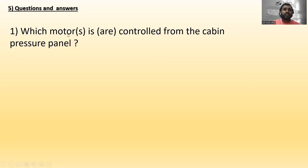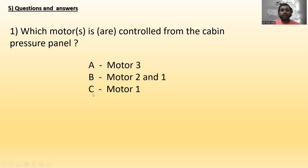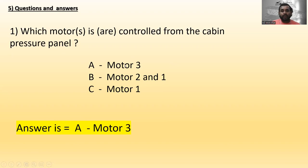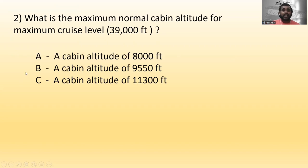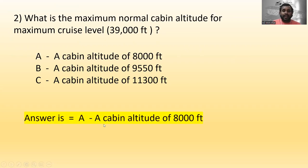Question one: Which motor or motors are controlled from the cabin pressure panel? Options: A — motor three, B — motors two and one, C — motor one. The answer is A — motor three. Question two: What is the maximum normal cabin altitude for maximum cruise level of 39,000 feet? Options: A — 8,000 feet, B — 9,550 feet, C — 11,300 feet. The answer is A — a cabin altitude of 8,000 feet.